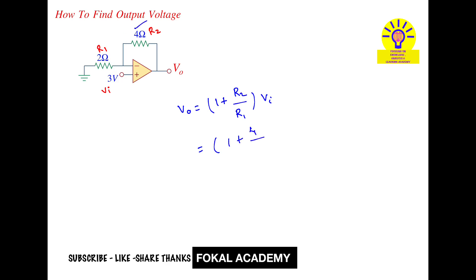So 4 upon 2 into input voltage is 3. 1 plus 2 is 3, 3 into 3 is 9. So 9 volts is the output voltage for the given op-amp circuit.